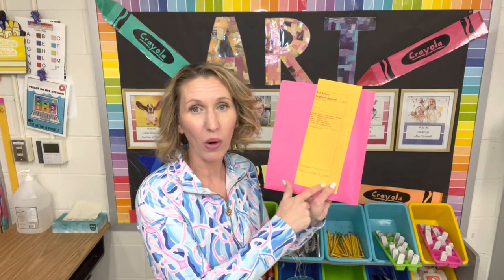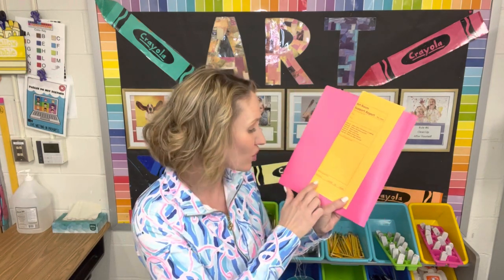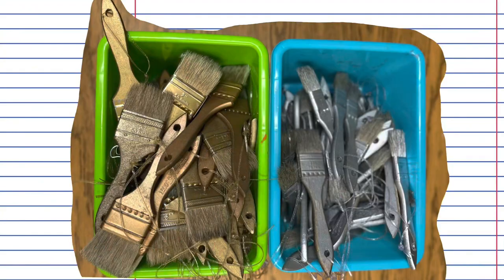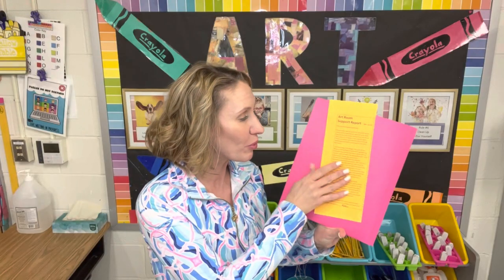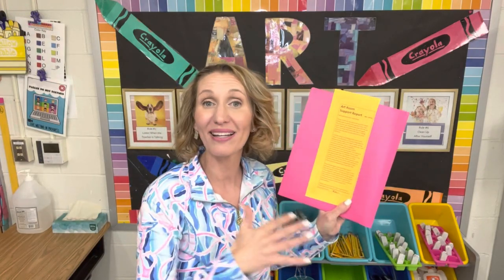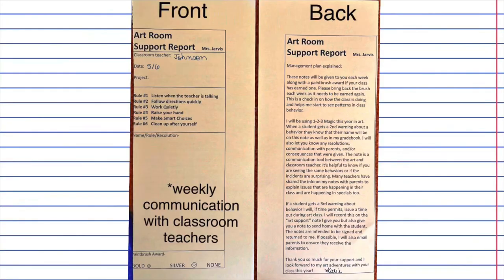At the bottom I have a spot where I circle what class award was earned — gold, silver, or no paintbrush. On the back of this art support report I have my management plan typed out. This is really helpful for teachers new to our building so they understand what they're seeing on this paper. It's a good thing for them to keep for their records.